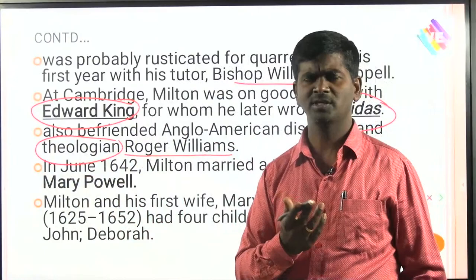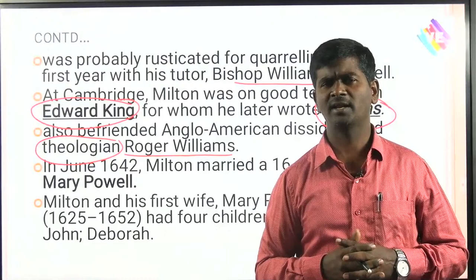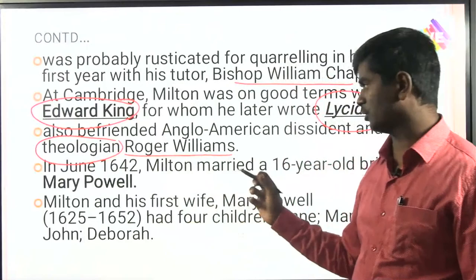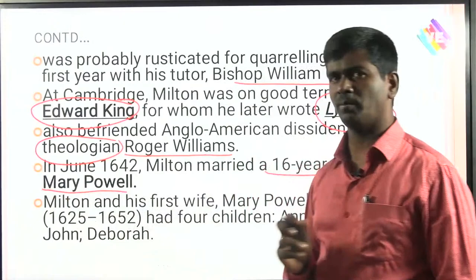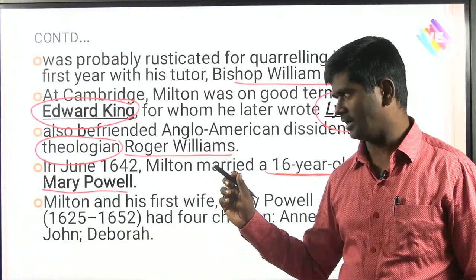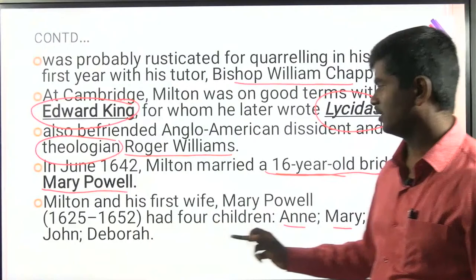John Milton's age was all about religious controversy — whether Anglicanism or Protestantism was dominant. In June 1642, Milton married a 16-year-old bride, Mary Powell. He was about 28 or 29 at the time. Milton and his first wife Mary Powell had four children: Annie, Mary, John, and Deborah.